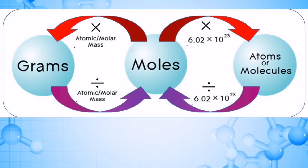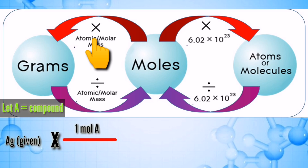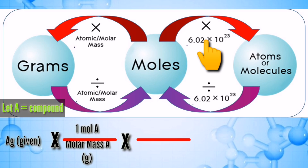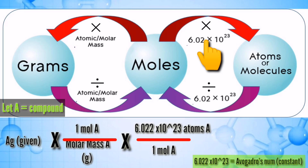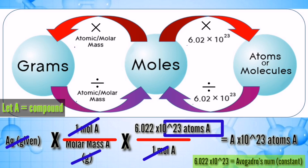This is our roadmap to get the correct answer. First, we're going to convert grams or mass to moles before we can get the number of atoms or molecules. For example, using compound A as our example, we start with our given A, multiply by one mole of substance A, then divide by the molar mass of compound A, then multiply again by Avogadro's number, which is 6.022 times 10 to the 23rd power, and divide by one mole of compound A.